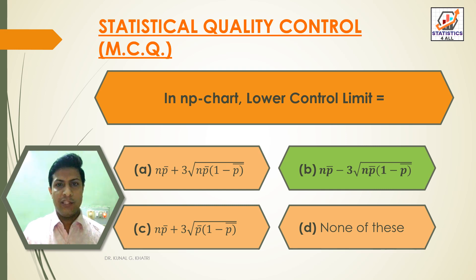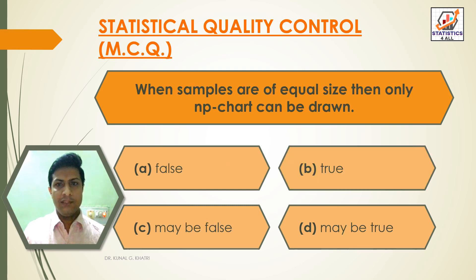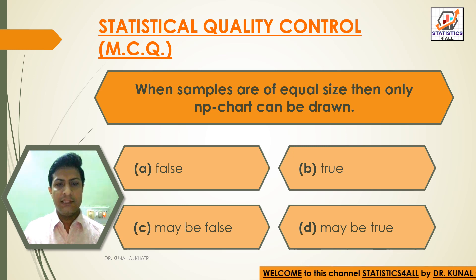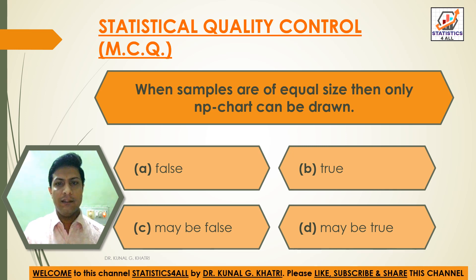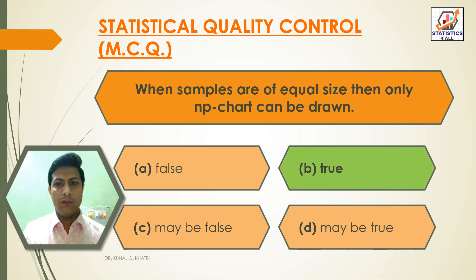Next question: when samples are of equal size, then only NP chart can be drawn. Option A: false, Option B: true, Option C: may be false, Option D: may be true. Answer: Option B — true. When samples are of equal size, then only NP chart can be drawn.